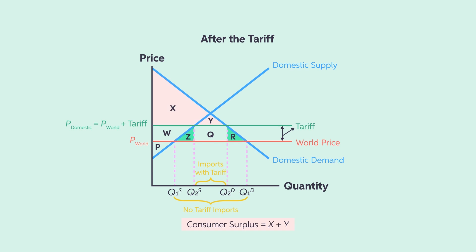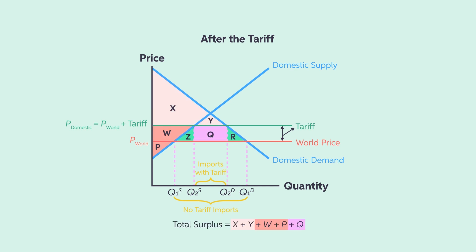After the tariff, the consumer surplus is reduced to the area of X plus Y. The producer surplus increases to the area of P plus W. The price rises by the amount of the tariff and the market is closer to the equilibrium situation without trade.